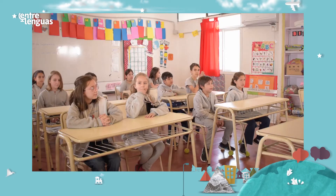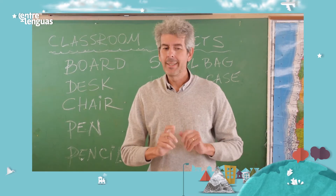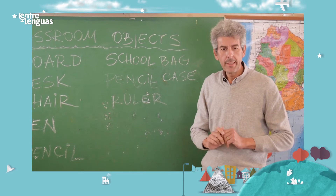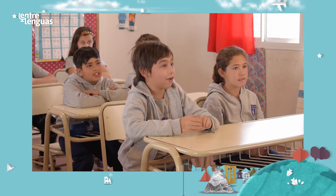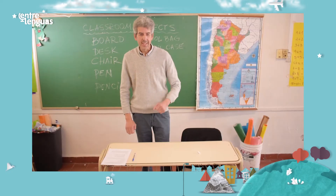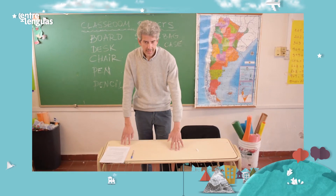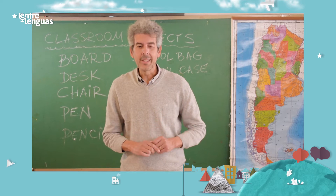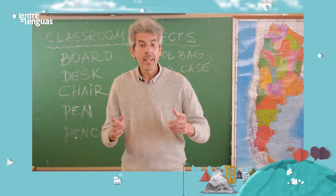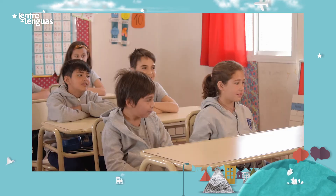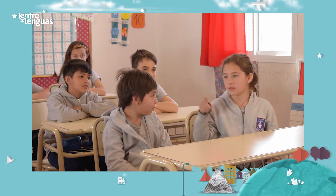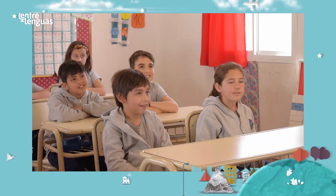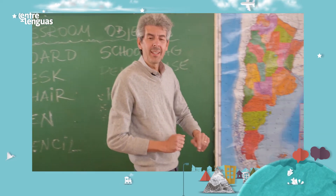Let's have a look around the class. Let's see — this is a board. What color is it? You're right! And what is this? Yes, it's a desk. And how many desks are there? Great — there are ten desks.